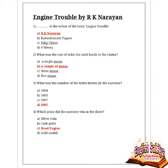Next question: what was the number of the ticket drawn by the narrator? Options are 1004, 1003, 1007, and 1005. The correct answer is 1005 — that was the number of the ticket drawn by the narrator.